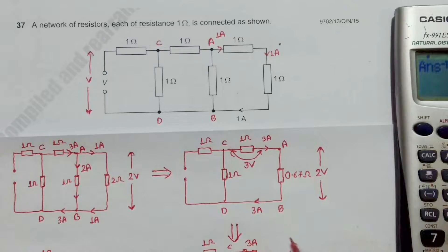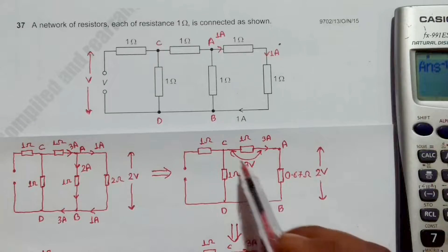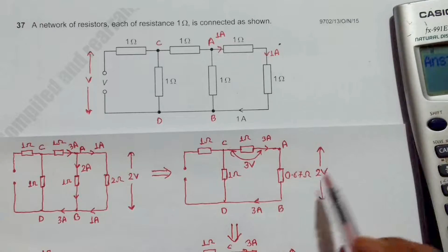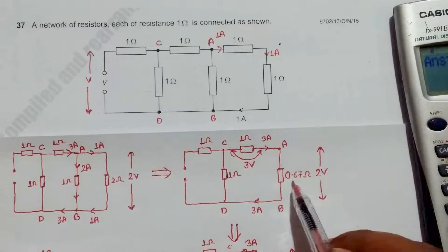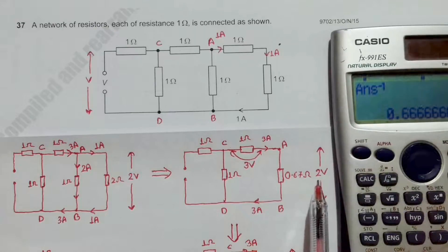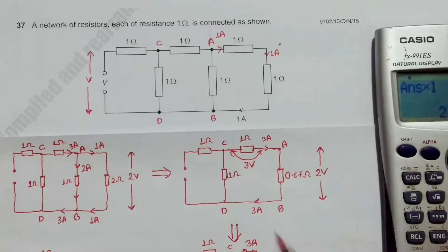I've noted 2 volt across AB. This resistor and the 1 ohm resistor are in series, so using the voltage divider: if it is 2 volt across 0.67 ohm, it should be 3 volt across the 1 ohm. We can calculate: 2 ÷ 0.6667 × 1 = 3 volt. So we have 3 volt across the 1 ohm resistor.